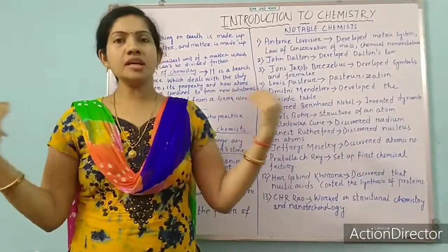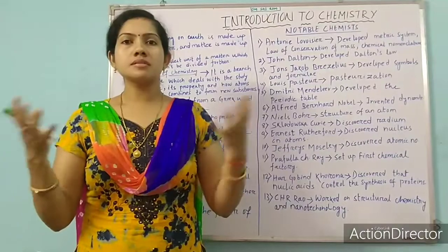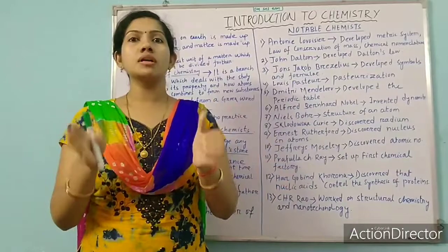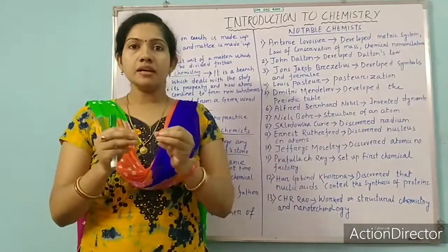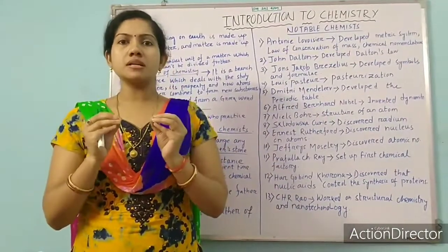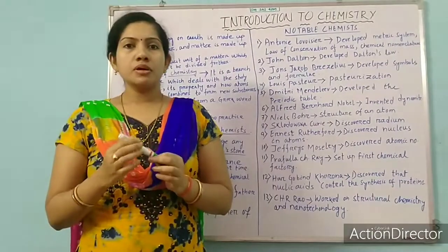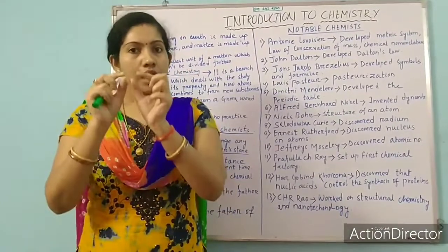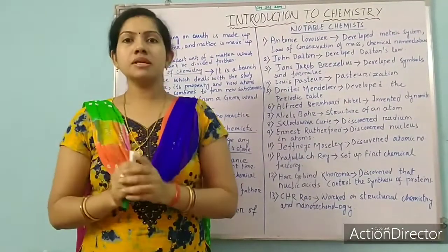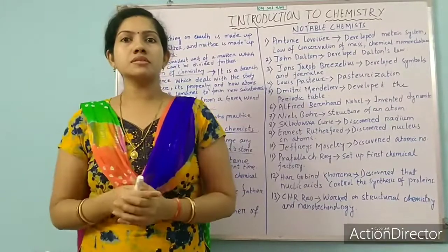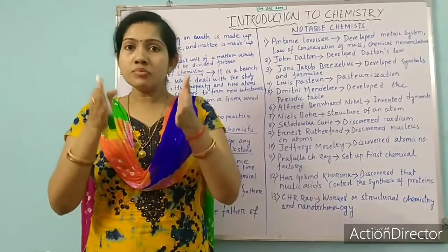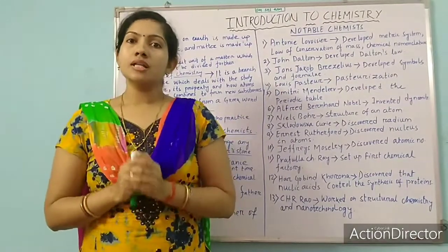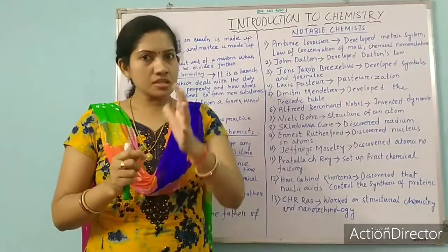What is matter? Everything around us — the desk, the bench, the fan, we ourselves — everything around us we call it matter. Matter consists of very small particles. Suppose I take a piece of chalk and I break it, I break the small piece again and again, and a time will come when I cannot break the piece of chalk any further. That is the smallest part of the chalk piece.